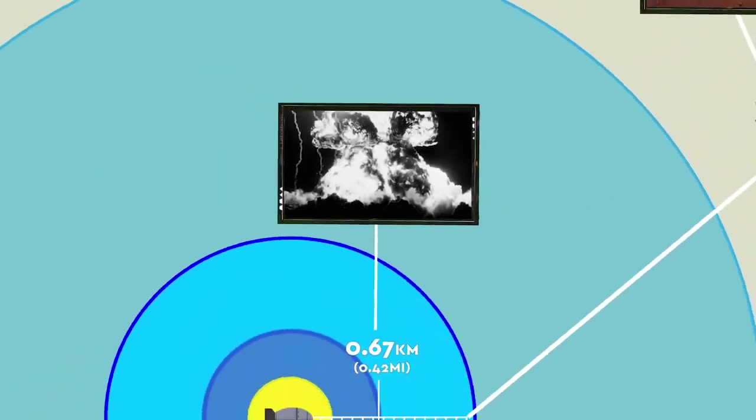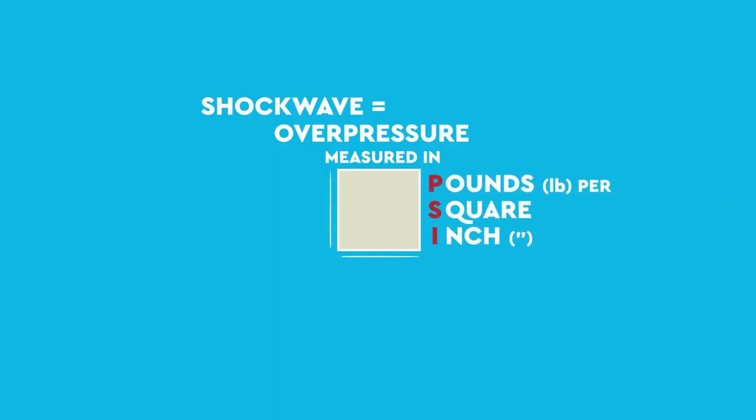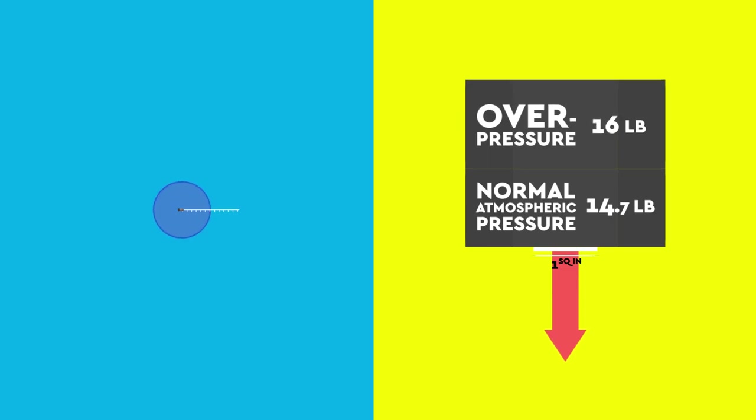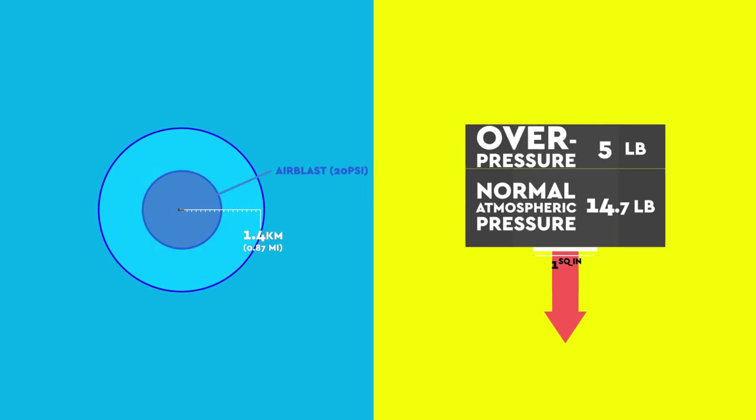So why did the freezer survive on this occasion? There are two key factors here. The overpressure caused by the shockwave, which is measured in pounds per square inch, and is anything above normal atmospheric pressure, would likely have dissipated at 1.4 kilometers, going from 20 psi to around 5 psi or lower at this point.